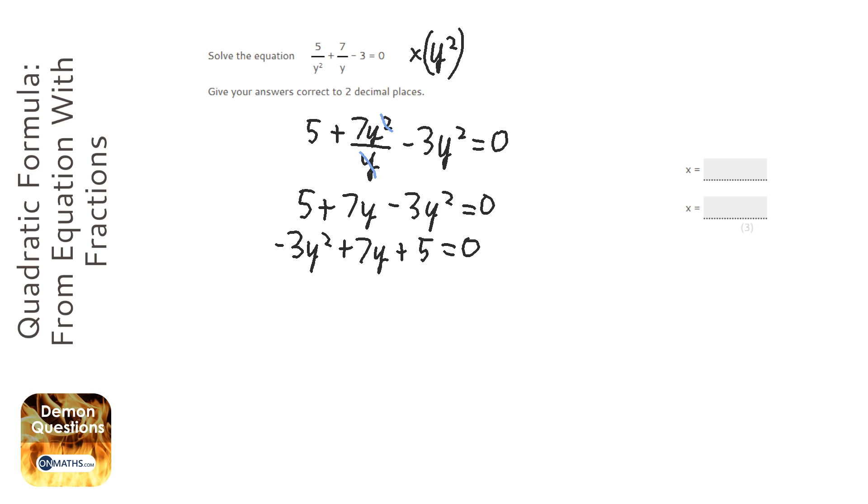So we've got to find out what a, b, and c are. a is the number before the y squared, which is minus 3. b is the number before the y, which is 7, and c is the number on its own at the end.